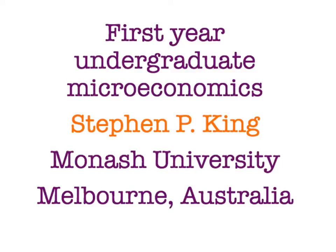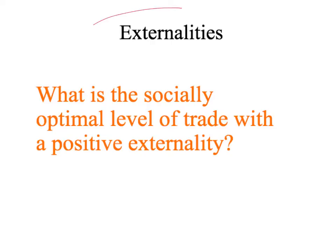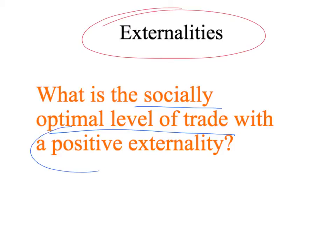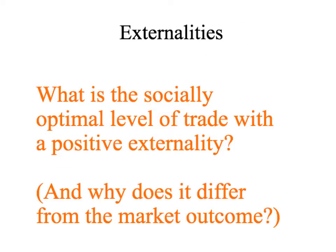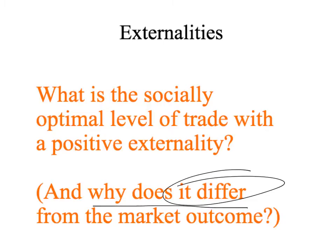Welcome back to first year undergraduate microeconomics. Our topic is externalities, and the question we're going to look at in this presentation is: what is the socially optimal level of trade with a positive externality? We'll find that with a positive externality, the socially optimal level of trade is no longer the level of trade from a perfectly competitive market. So the second question is: why does the socially optimal level of trade, when we have a positive externality, differ from the market outcome?